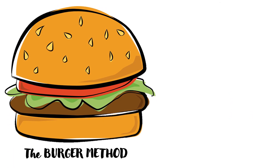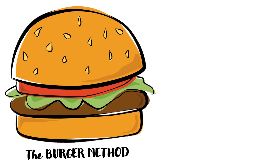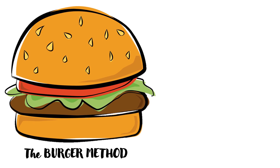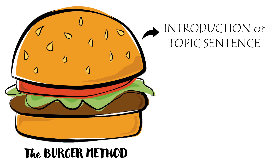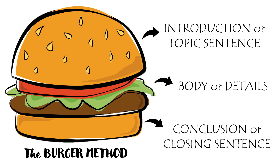The common method that applies to both the descriptive and the imaginative paragraph writing is the burger method. Just like a burger, a paragraph also consists of three important parts, without which neither a burger nor a paragraph will have any meaning. Let us imagine that the top layer of the burger is the introduction or the topic sentence. The middle layer is the body or the details of the paragraph, and the third is the conclusion or the closing sentence. When all these three parts come together, we get a complete paragraph.